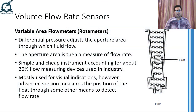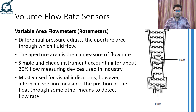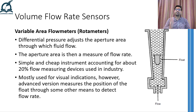So getting right to the point, the first flow rate sensor that I am going to discuss is commonly known as rotameter. Basically, it is a variable area flow meter, which is suitable for measuring the flow rate of fluids that are moving against gravity in vertical pipes.